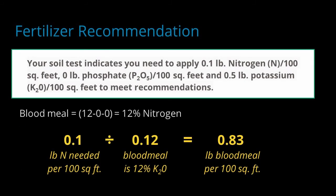We needed a tenth of a pound of nitrogen for 100 square feet according to our fertilizer recommendations. However, since blood meal only contains 12% nitrogen and the remainder is other materials, we need to apply a greater amount of blood meal. When we do the math, it turns out that we need 0.83 pounds of blood meal for every 100 square feet of garden area.